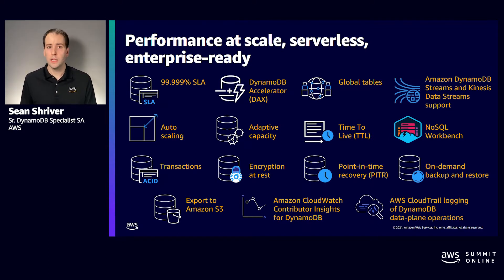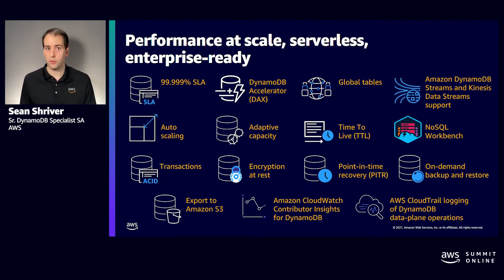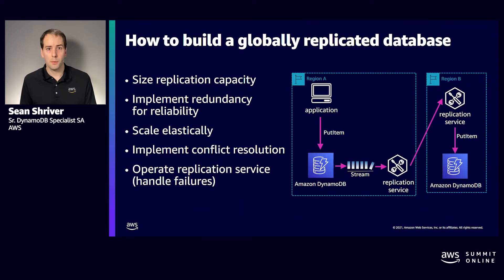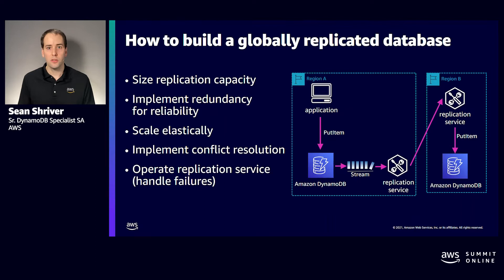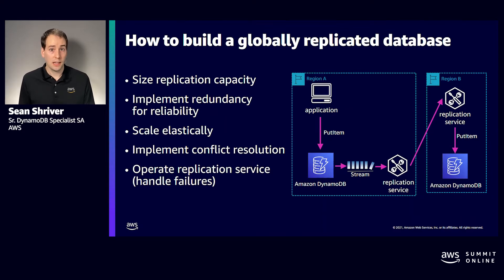DynamoDB was launched in 2012, but we didn't release Global Tables until six years later in 2018. Customers had to do the undifferentiated heavy lifting and build their own replication service for years. To build a strong replication service in your own AWS account, you need to solve a number of complex problems — determining how much capacity is required in AWS Lambda or Amazon EC2, which regions you need to operate in, and what AWS limits you need to increase to meet your demand, all weeks or months before your go-live date. You need to design the monitoring system, set up auto scaling, CloudWatch dashboards, and write documentation and run books.